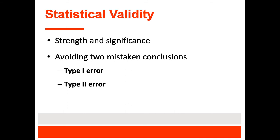Type 1 error is where we say there's a difference — our independent variable has an effect or two variables are related — when in reality there is no difference or relationship present. That's the worst error for science. We'd almost rather make a Type 2 error, which is not finding a statistical difference where one might actually exist. There may be some effect of the independent variable, but our study wasn't strong enough to detect it, or our p-value was something like 0.08 rather than 0.05. That 8% chance means there may be a real relationship we just need to try harder to find, to make sure we're not getting a spurious finding.